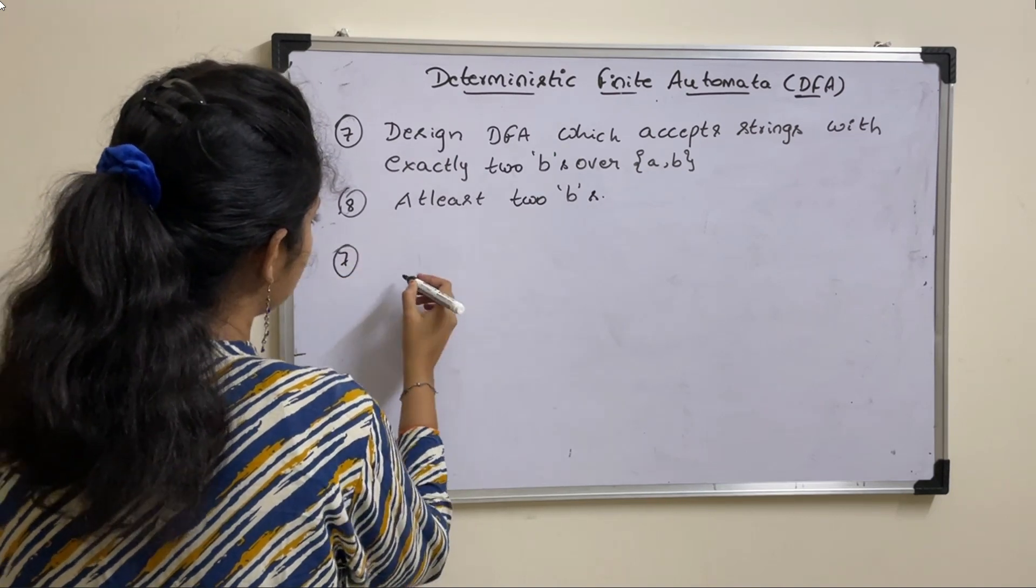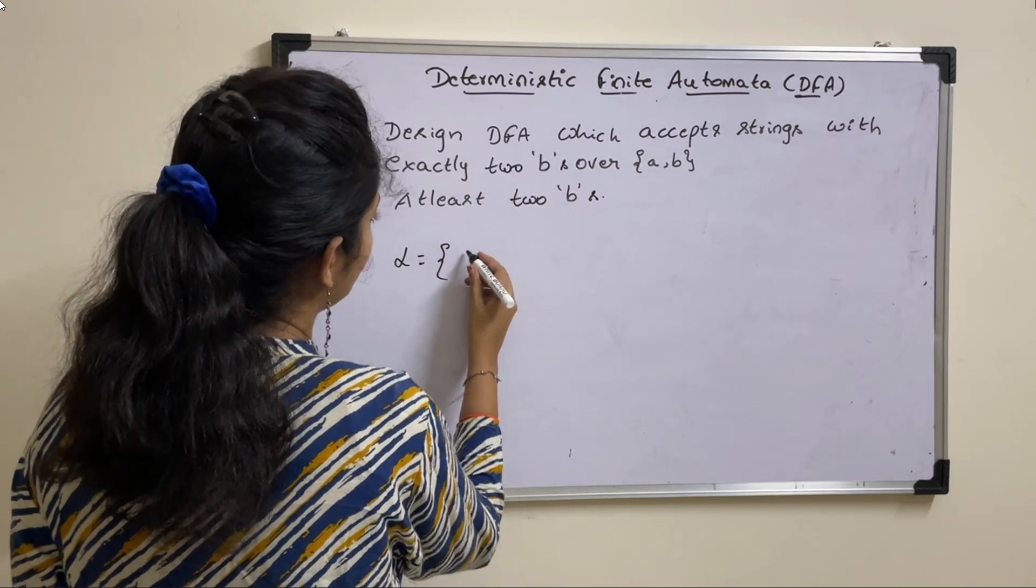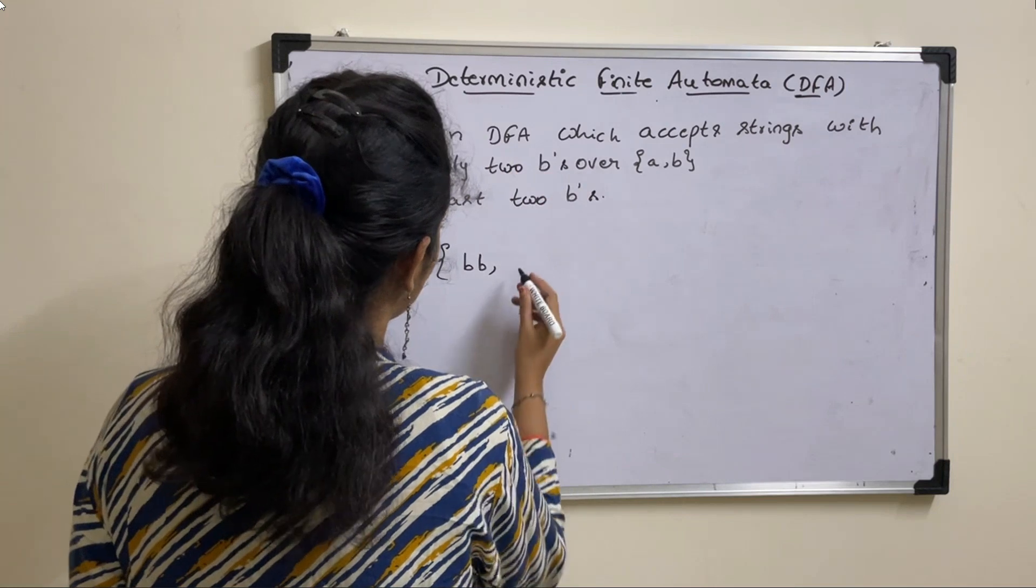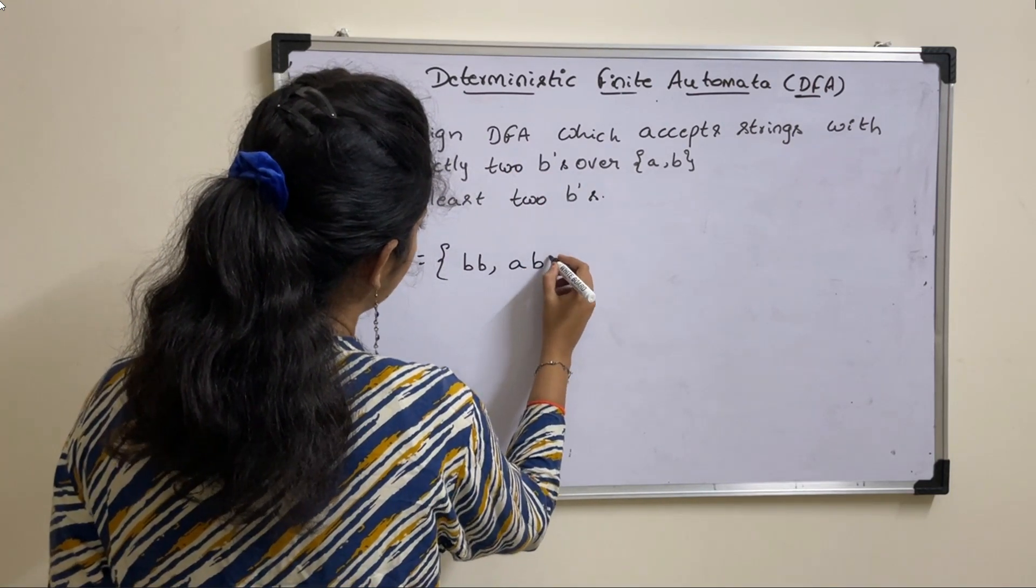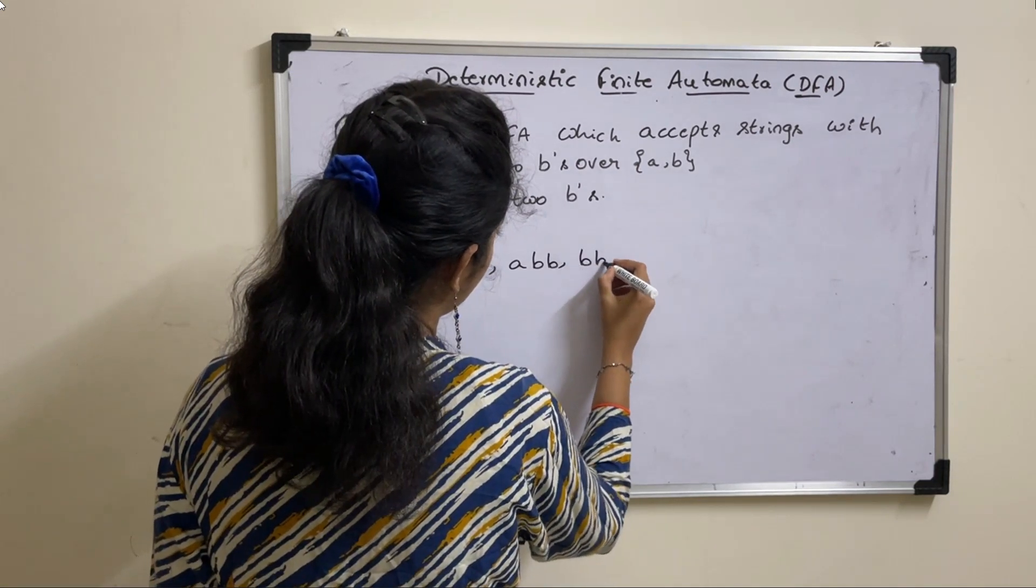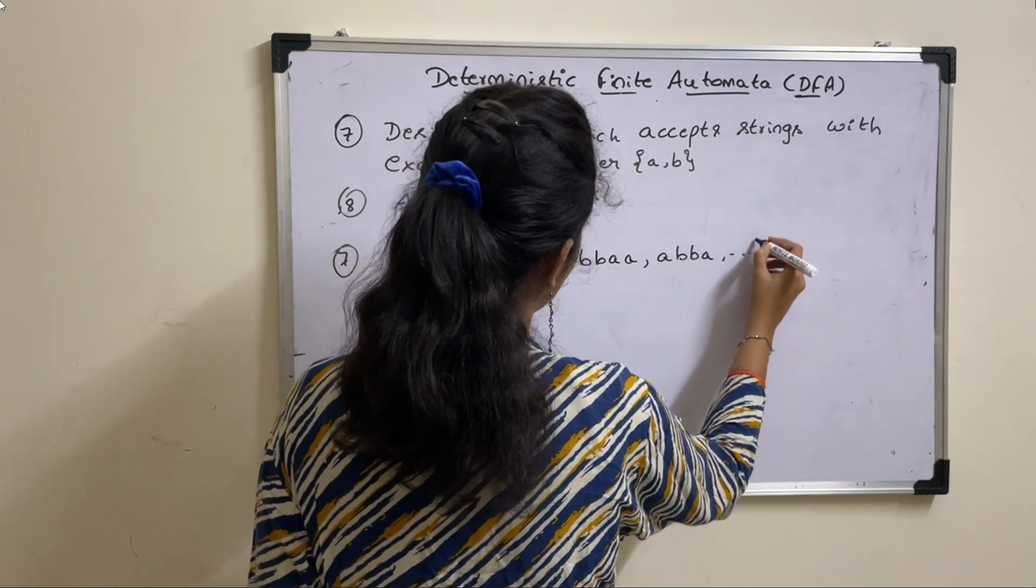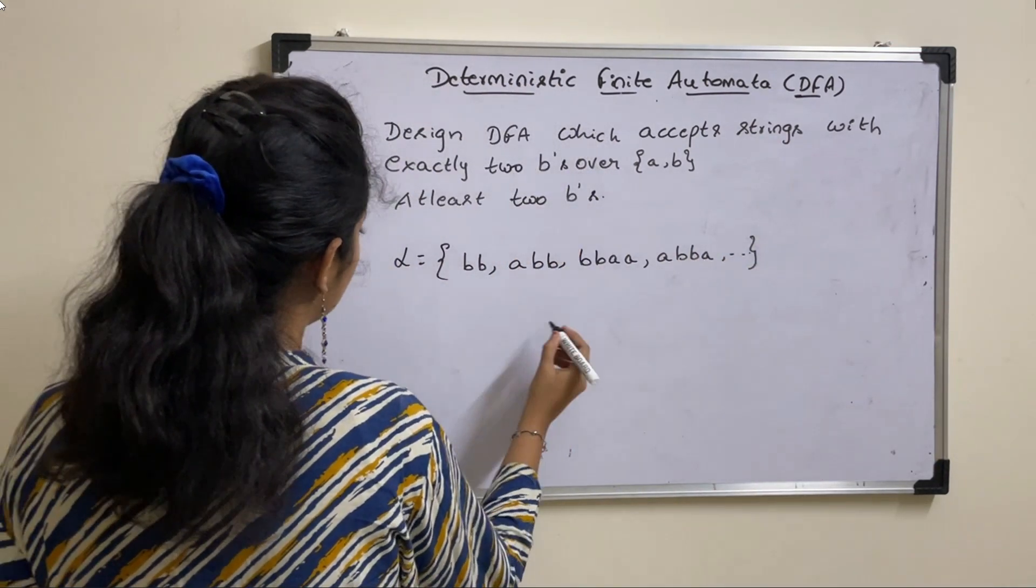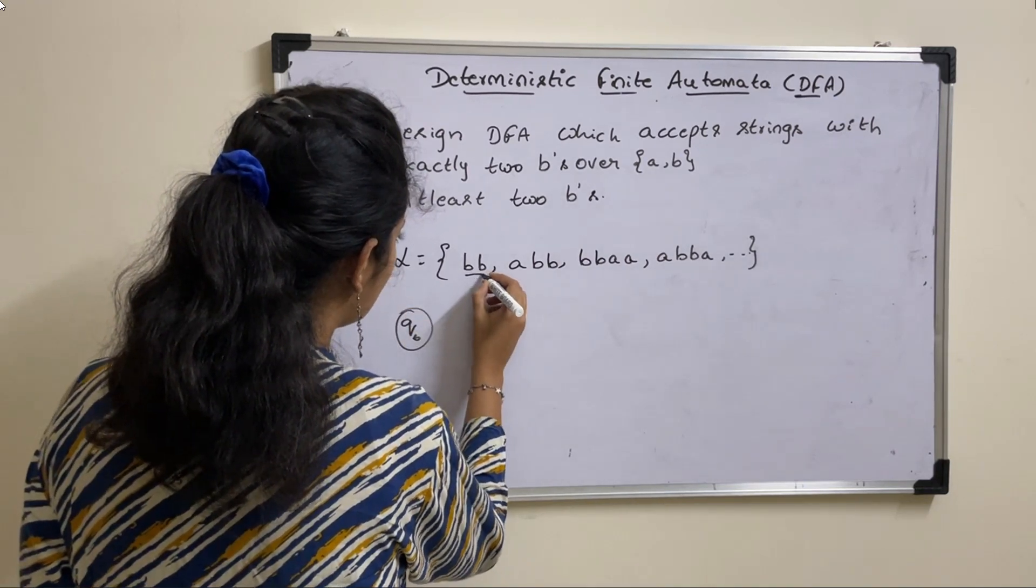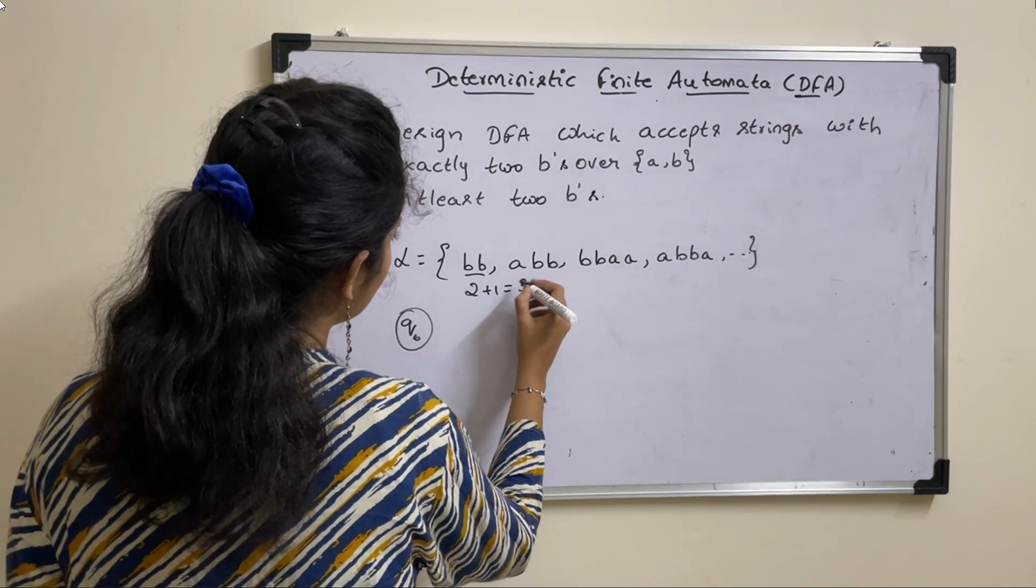So let us take the seventh question first. The language is exactly two B's. So minimum two B's, and after this you can have any number of A's. So BBA or ABBA and so on. How to construct DFA for this? Take your minimum string length is two. So number of states required are two plus one, that is three.